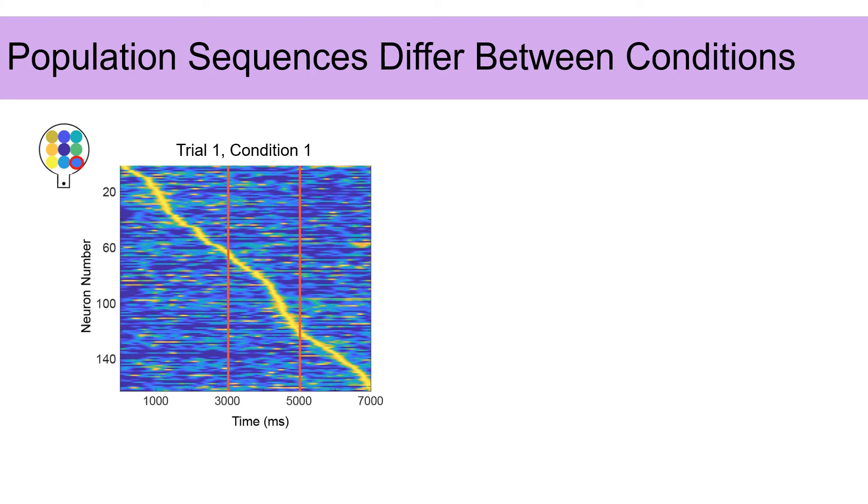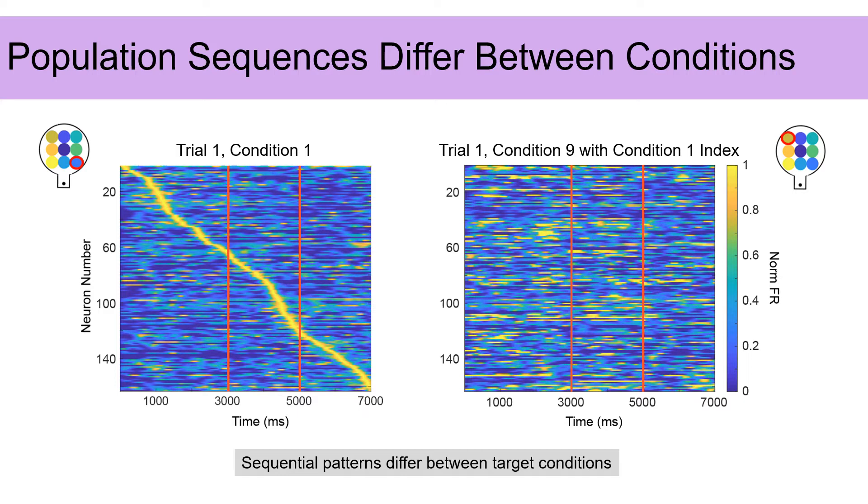And importantly, we wanted to know whether these sequences were different between remembered target locations. This example shows all neurons firing for one trial for a target on the right of the arena. The sequential activity pattern is clear throughout the trial. This second example shows the same neurons indexed to the same order during a trial where the target is on the left. The same sequential activity is obviously not present. This made us think that this pattern of activity could be meaningful.